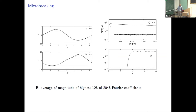The traditional way of diagnosing that is to look at the Fourier coefficients. If we look at the Fourier coefficients of the smooth one, as you'd expect, they decay exponentially and then are at machine precision. If you look at the broken wave, they just decay algebraically.